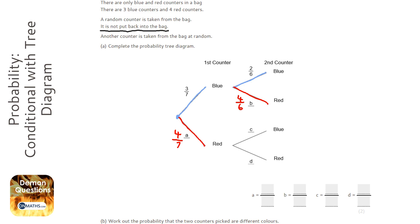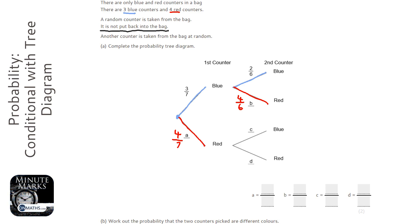Let's see where those numbers come from. The question says there are three blue counters and four red. Therefore the first probability of blue being three over seven is because there are three blue counters and seven altogether. The second probability — if I picked a blue on the first counter and then picked a blue again — is two over six.